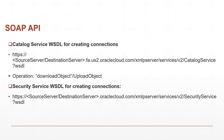The first one is the BI Publisher Catalog Service. By using this service we are going to download and upload files, and it has many other operations as well. The second service is the Security Service. By using the security service you can log into the application, and when the process is completed you can log out.